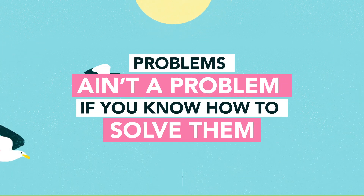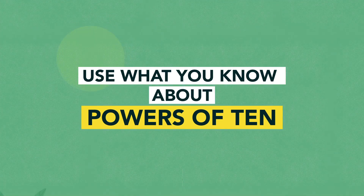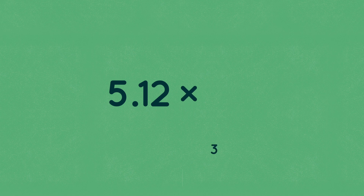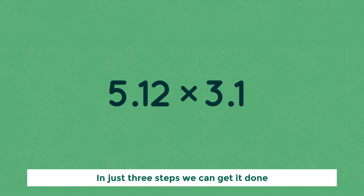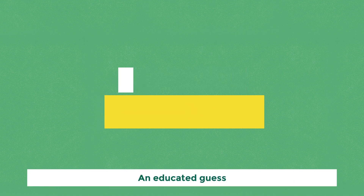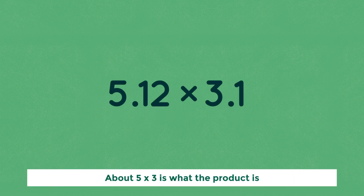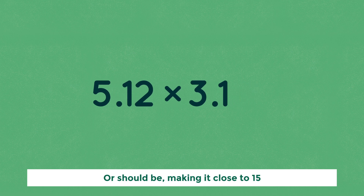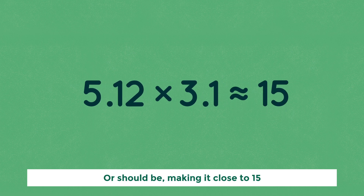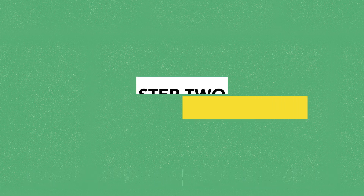Problems ain't a problem if you know how to solve them. Use what you know about powers of ten. Take 5.12 times 3.1 — in just three steps we can get it done. Step one: estimate, an educated guess. About five times three is what the product should be, making it close to 15.